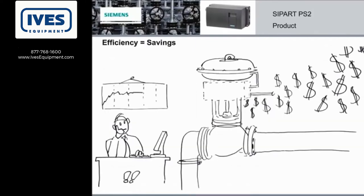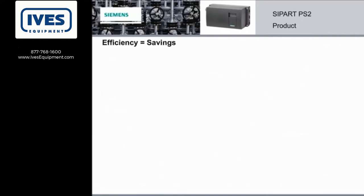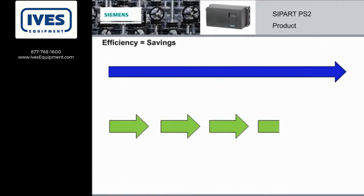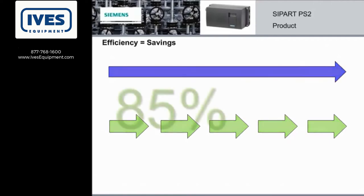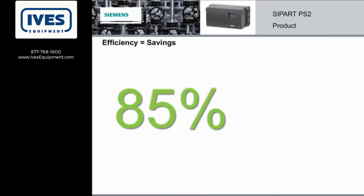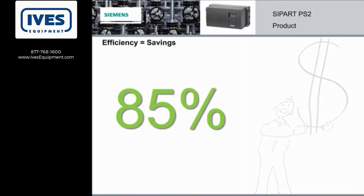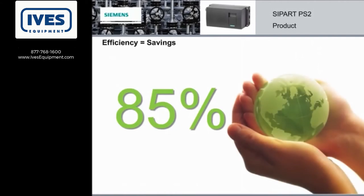We all know that more efficiency means more savings. Most conventional positioners have continuous air flow, but not the PS2. Instead, it uses a unique pulsed air design to deliver the air to the actuator. This means that the PS2 consumes 85% less air to do the same job as a conventional valve positioner. This extremely low air consumption means customers not only save money in compressed air costs, but they also cut back significantly on CO2 emissions, making the PS2 the green choice.